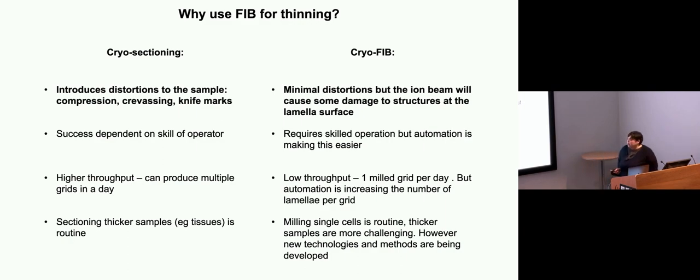Both of these techniques, the success is very much dependent on the skill of the operator. Although with the FIB, the newer technology, there's a lot more automation. It's becoming much more user-friendly. Neither are high throughput, but cryo-sectioning probably wins out. If you're good and know what you're doing, you can produce lots of grids in a single day. Whereas with the cryo-FIB, you're sort of limited to one grid a day, and the number of lamellae depends on whether you're physically sitting in front of the instrument milling or you can run it overnight with automation.